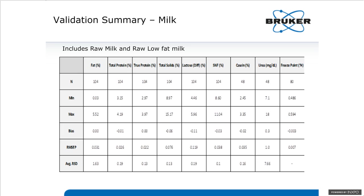Looking at the root mean squared error of prediction: 0.031 on fat, 0.026 on protein, 0.022 on true protein — very close to the accuracy of the reference methods. Any spectroscopic method like FTIR or near-infrared is a secondary method calibrated using the primary method, meaning they can never be more accurate but are often much more precise. The average relative standard deviation for fat over the range of 0 to 5.5% fat was 1.63. When running skim and very low-fat samples, the RSD tends to climb, which drives that number slightly higher than you'd get for just raw milk analysis.